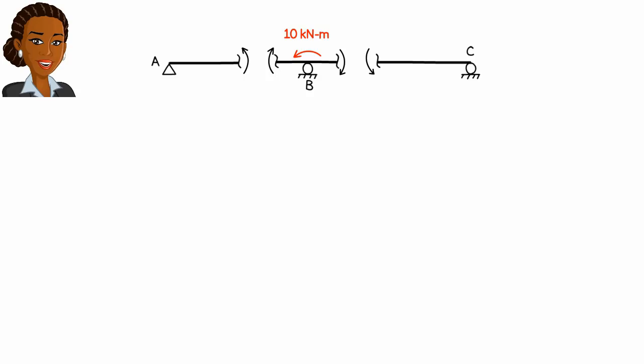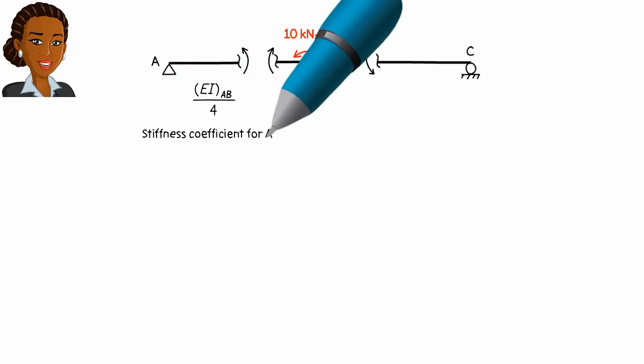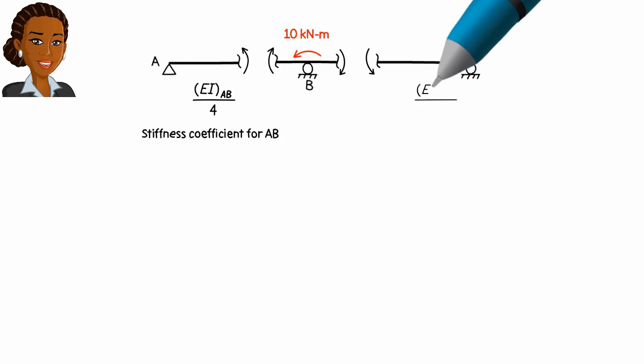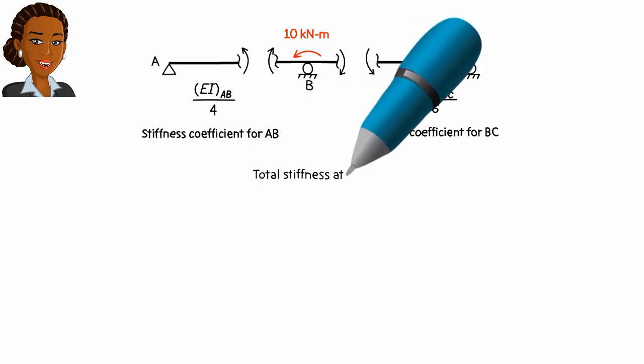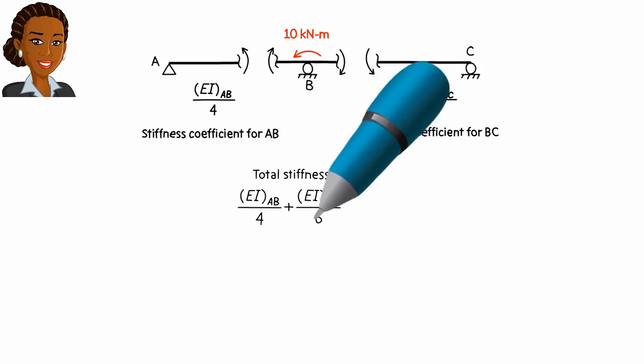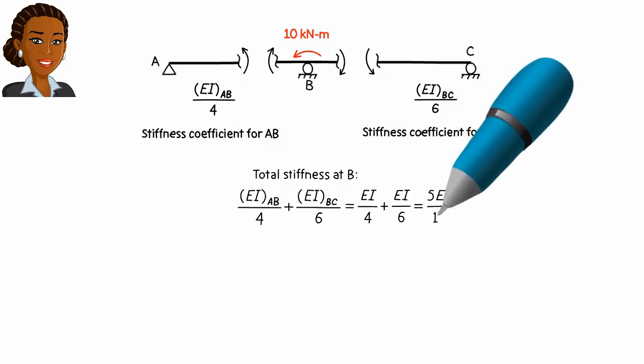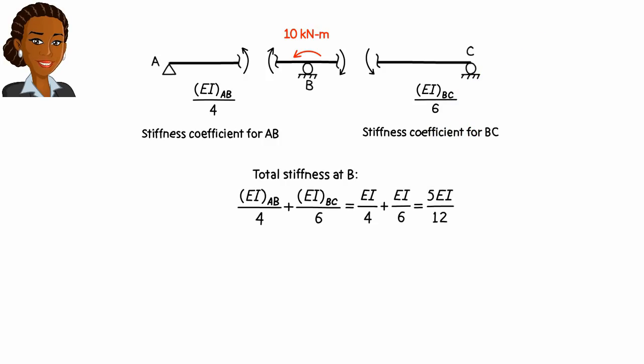We measure the stiffness of each member in terms of its E, I, and L. More specifically, we define EI over L as the stiffness coefficient. For member AB, we get EI over 4. For BC, we get EI over 6. The total stiffness at the joint is the sum of these two coefficients. Here, since both members have the same EI, the sum can be written as 5EI over 12.